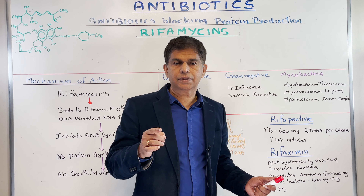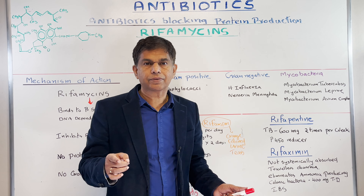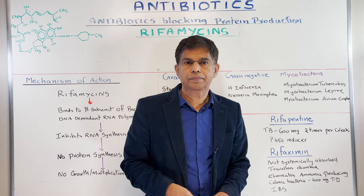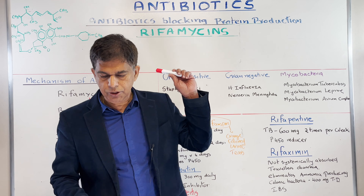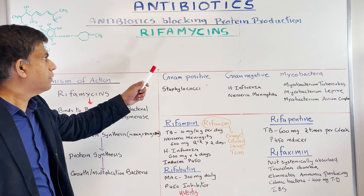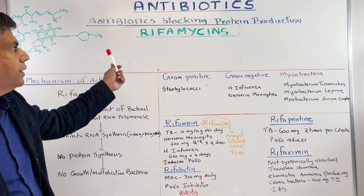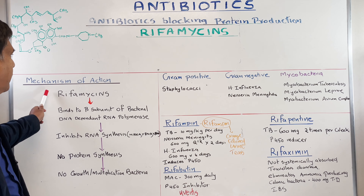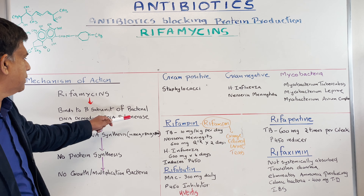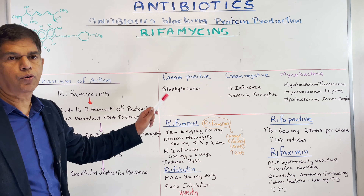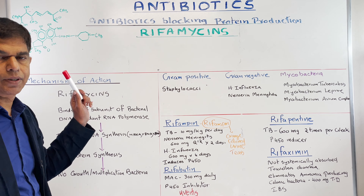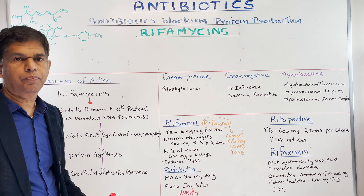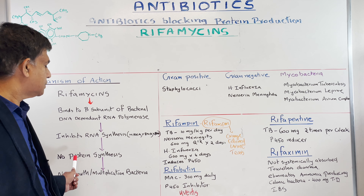Recently it was found that rifaximin can kill the bacterial flora in the colon which produces ammonia. When do we worry about hyperammonemia? When a patient has hepatic encephalopathy. Rifaximin — not systemically absorbed, stays in the gut and colon — kills the bacteria that produce ammonia, ammonia levels go down, and hepatic encephalopathy decreases or gets better. You can also use it for irritable bowel syndrome. The dose is typically 400 mg TID.